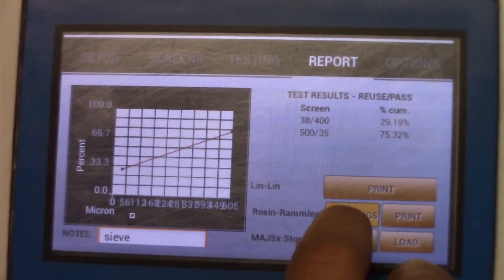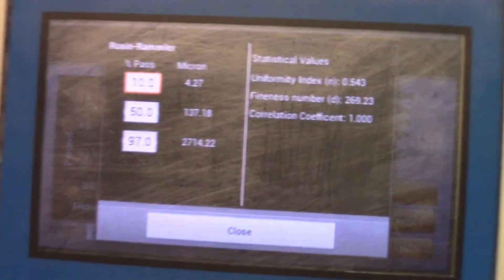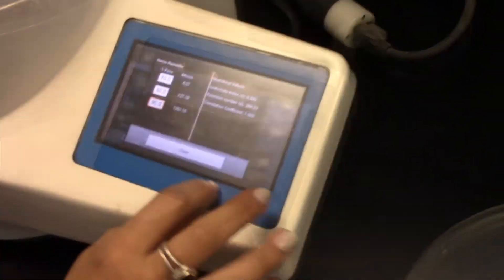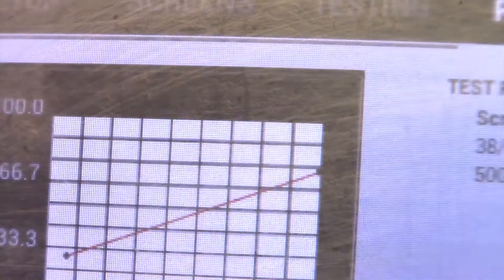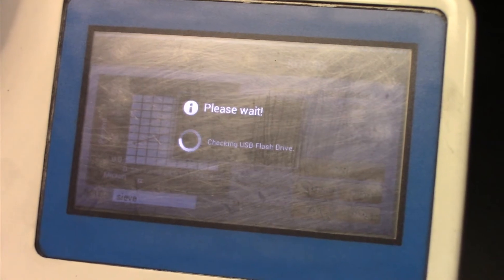Then I want to enter in my Rosin Rambler. So I'm looking for my D10, my D50, and my D90. As you can see it shows it here. I'm going to close it. Then I'm going to press print and it will also show it on the printout as well.